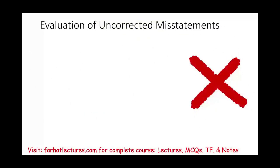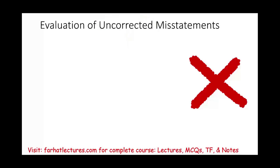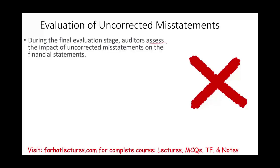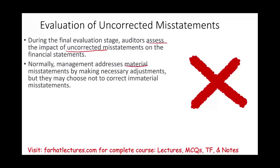Now at the end of the audit, we're going to have a list of uncorrected misstatements. We find an error — if it's factual, the company corrected it; if it's projected or from sampling, the company might have chosen not to correct it. We assume here they are immaterial, because if they are material, the company will have a worse headache — we might not give them an unqualified or unmodified opinion. During the final evaluation, the auditor assesses the impact of the uncorrected misstatements on the financial statement. Normally, material misstatements we assume are fixed; otherwise, we will not give them a clean opinion. But management may choose not to correct what we both agree is an immaterial misstatement.